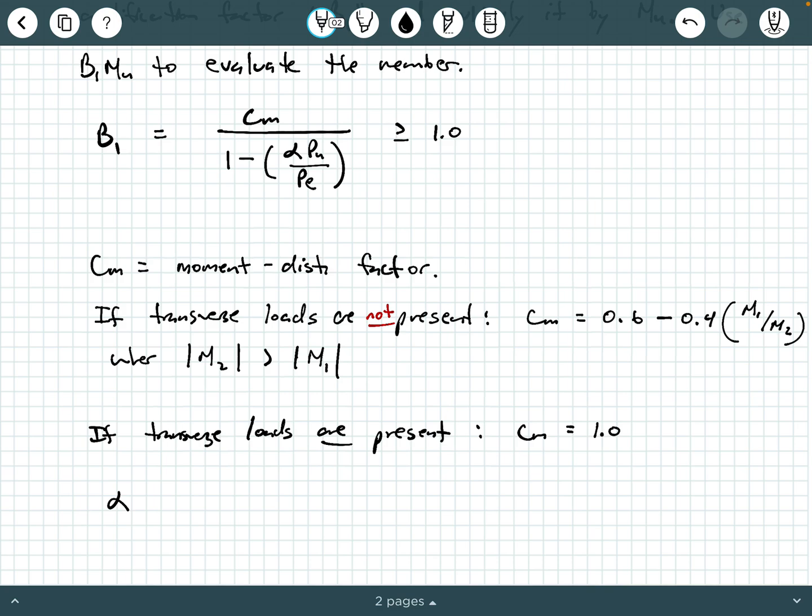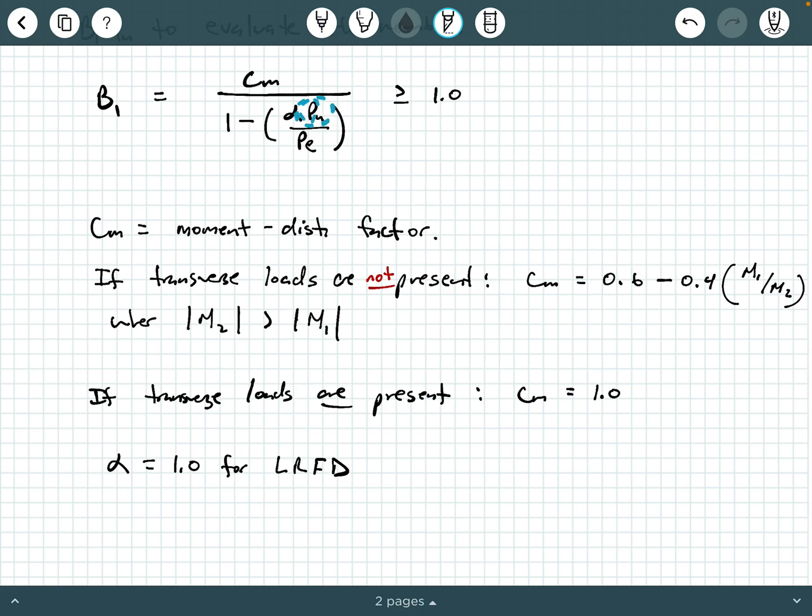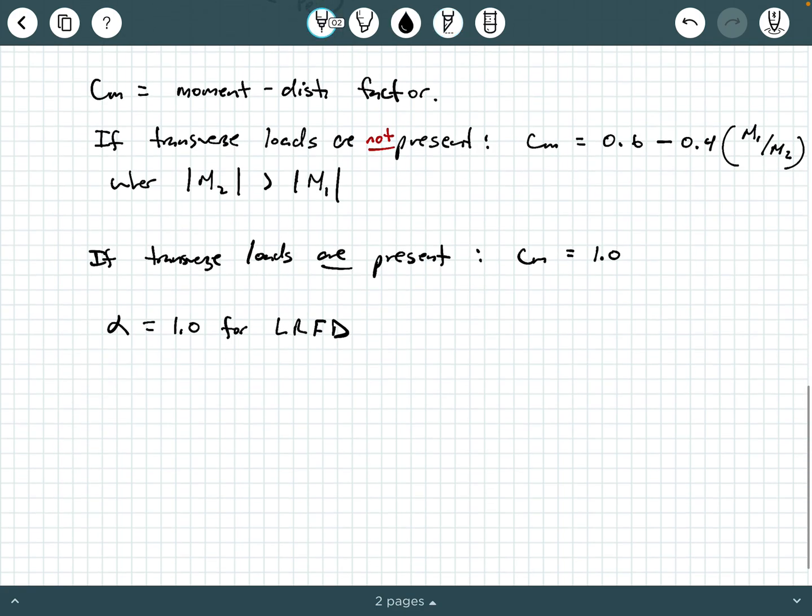Alpha equals 1.0 for LRFD. And you know what PU is. PU is your factored axial load. So we'll write that down. PU is the LRFD factored axial load.